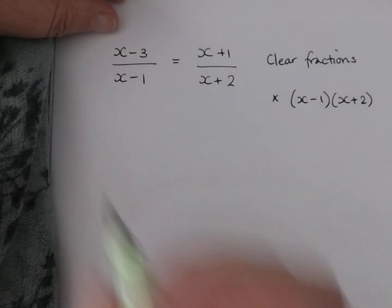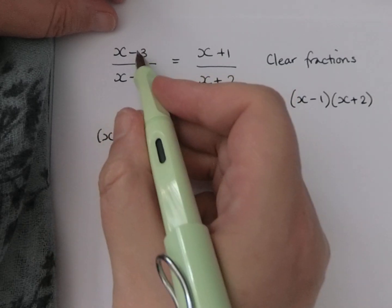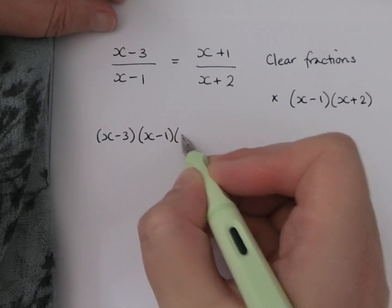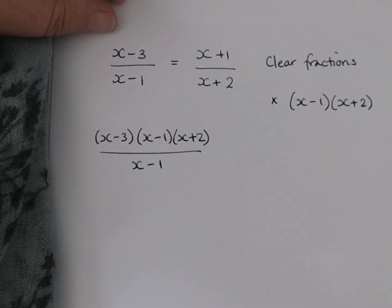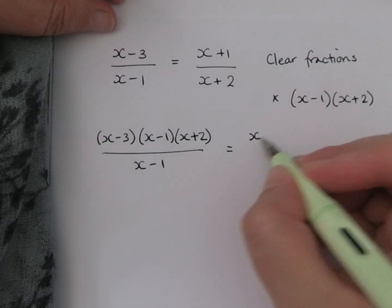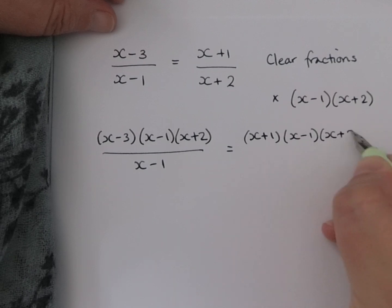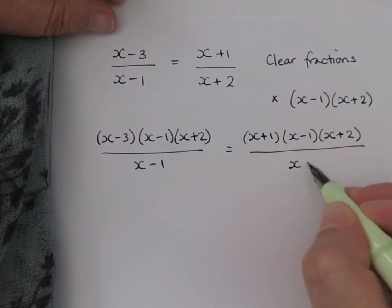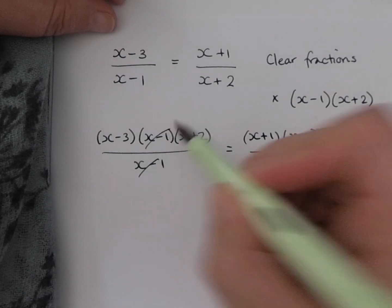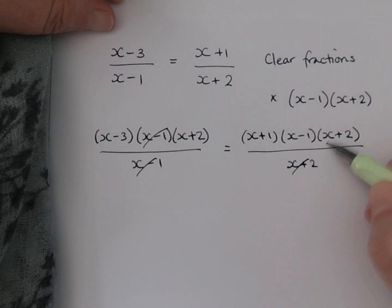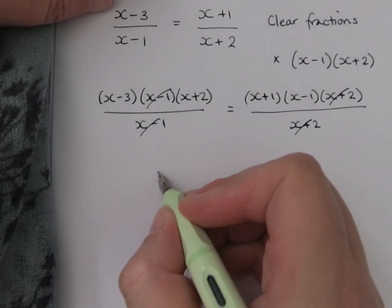If I multiply the left-hand side by this, this is where it becomes a little long-winded. We get (x-3), which is the numerator, multiplied by this new common denominator. Our right-hand side will become (x+1), which is the numerator, multiplied by (x-1)(x+2), which is our common denominator, all over x+2. Now we can cancel to get rid of our fractions. The x-1 and the x-1 will cancel, and the x+2 and the x+2 will cancel. So we've got rid of our fractions and now we have something a little nicer to see.